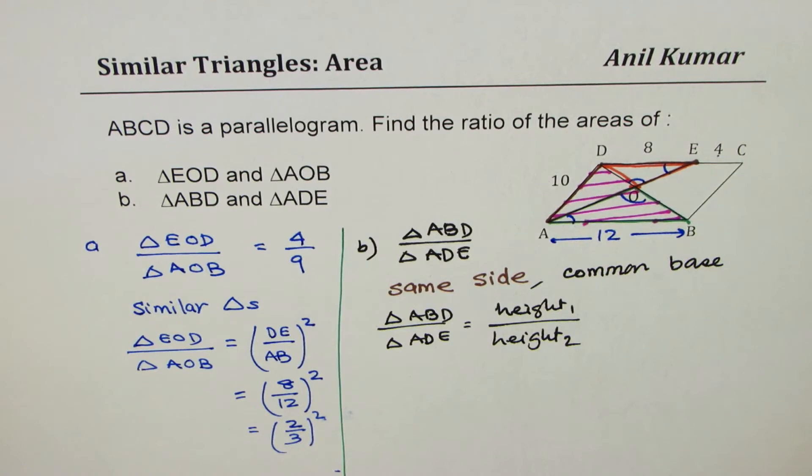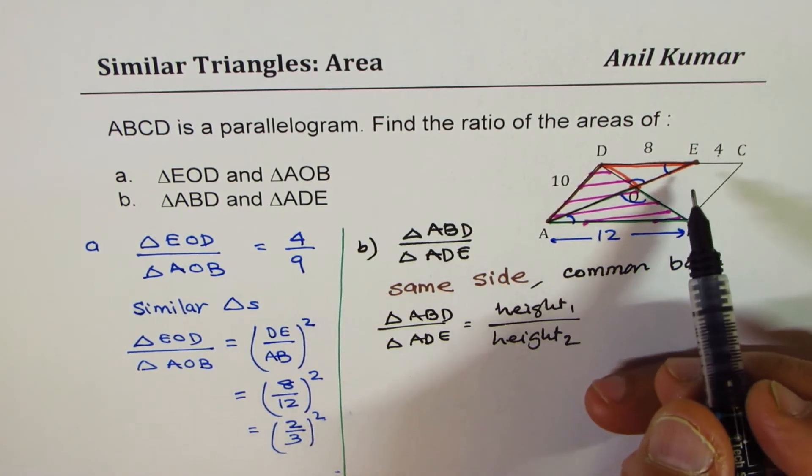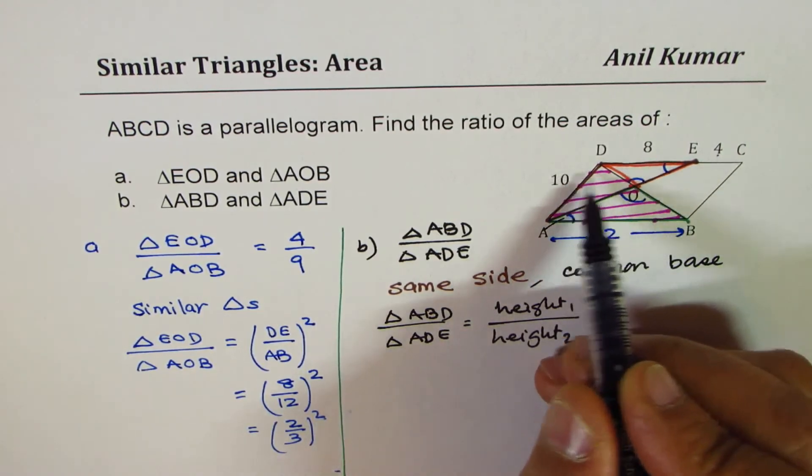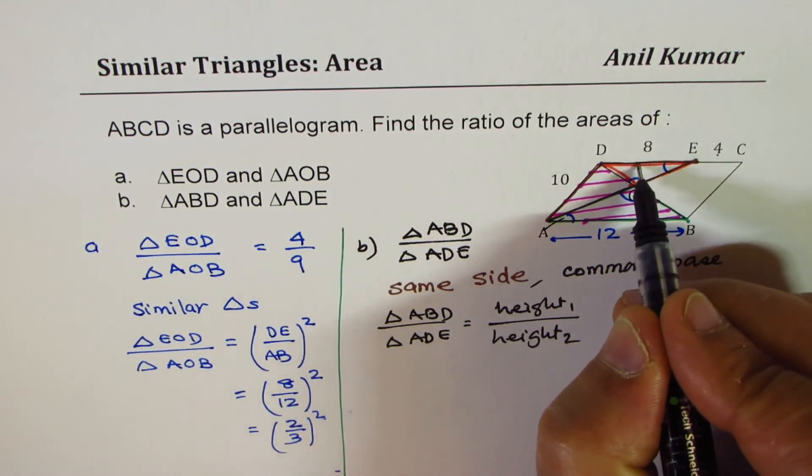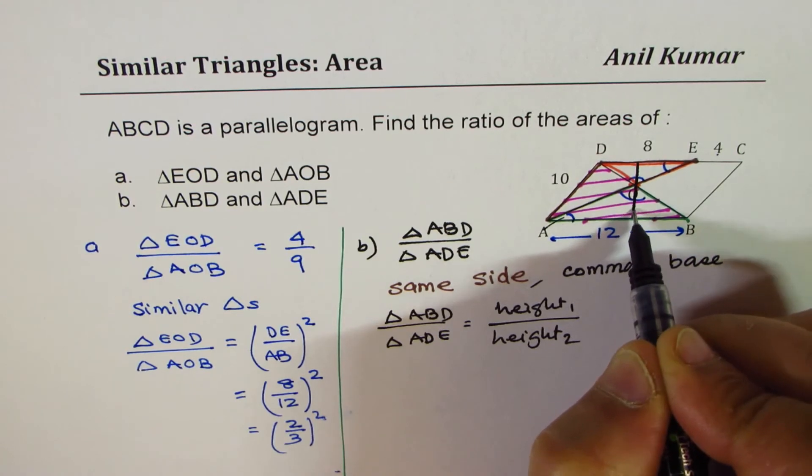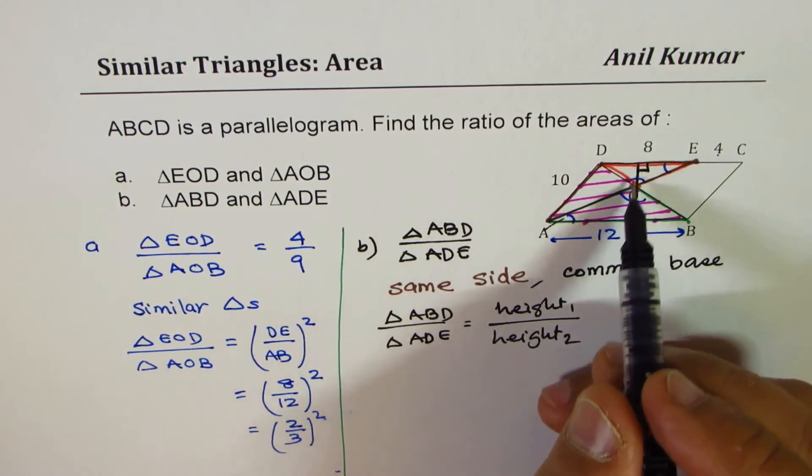So now we should figure out what is the ratio of their sides, rather heights. Now in these two triangles, which we are talking about, we can draw this as their height. Is it okay? So if that is the height,